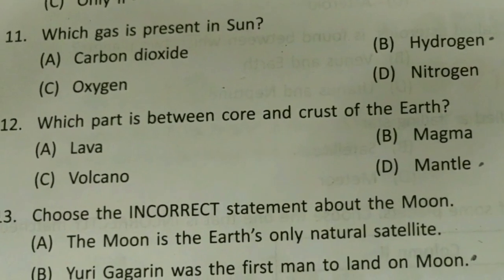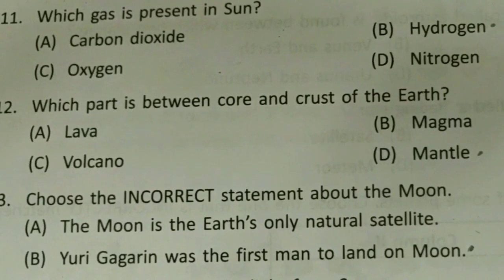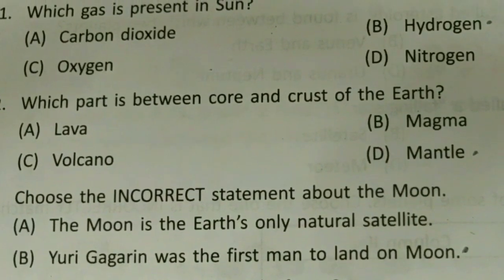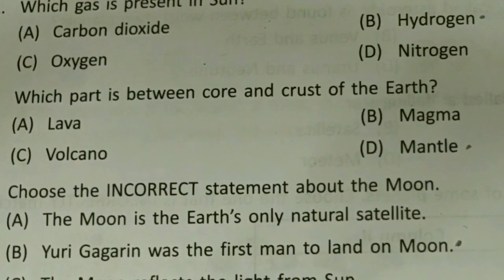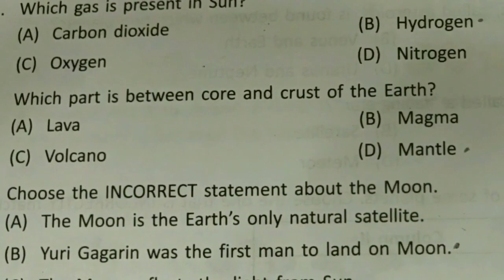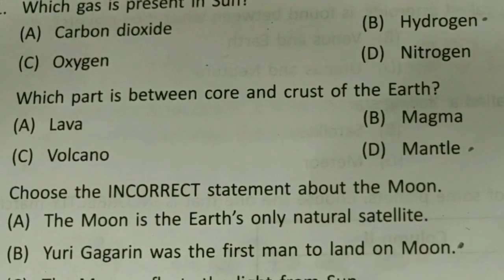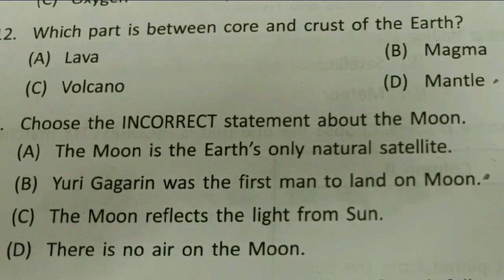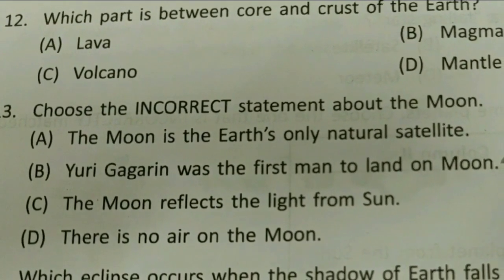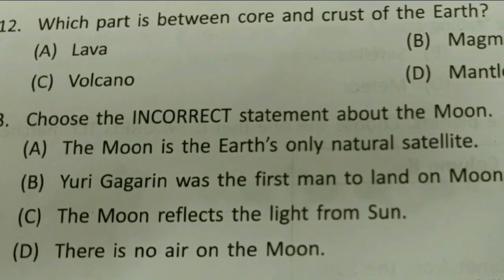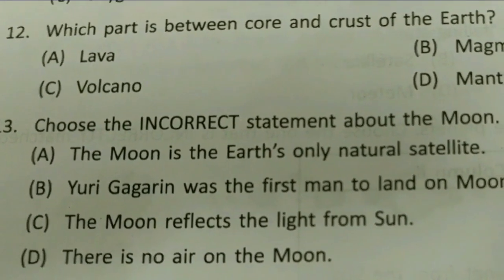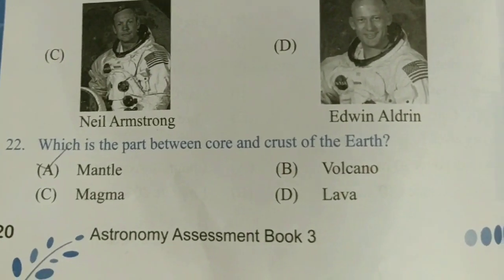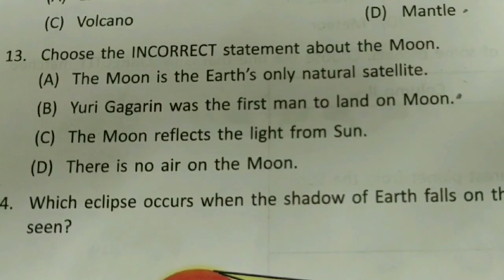Question 11: which gas is present in the sun? The sun contains hydrogen and helium. Among the options — carbon dioxide, oxygen, nitrogen, hydrogen — the correct answer is hydrogen. Question 12: which part is between the core and crust of the earth? You will find this in chapter 4, Our Earth. The answer is D — the mantle. The structure is core, mantle, crust.